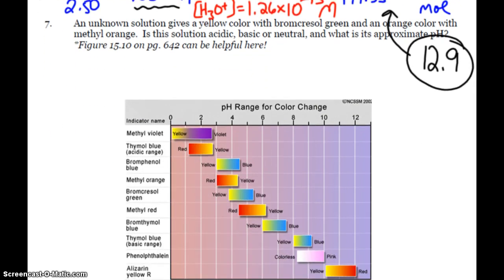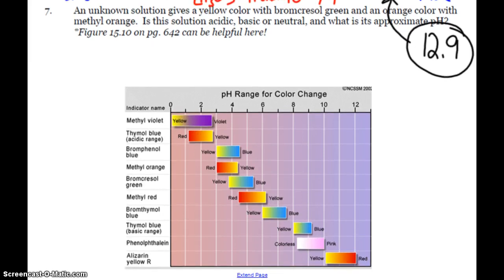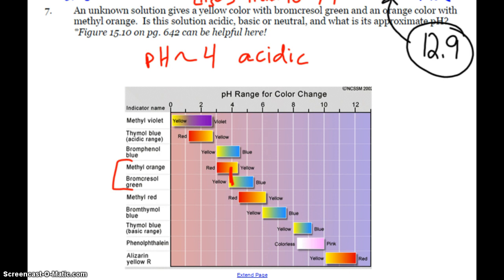The last one on this video: can you read some indicator colors? An unknown solution gives a yellow color with bromcresol green and an orange color with methyl orange. So is this solution acidic, basic, or neutral? What's the approximate pH? Looking at the chart, bromcresol green and methyl orange are right here — yellow and orange — so it looks like the pH is approximately 4, which would be acidic. That was just more for fun, because colors are fun.